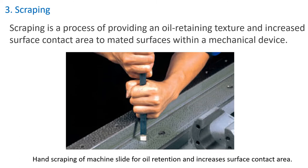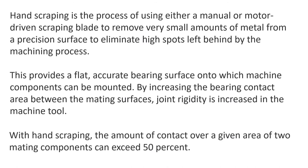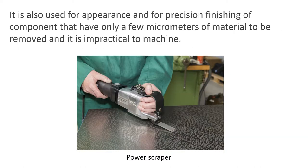Section 3: Scraping. Scraping is a process of providing an oil-retaining texture and increased surface contact area to mating surfaces within a mechanical device. Hand scraping uses either a manual or motor-driven scraping blade to remove very small amounts of metal. Scraping increases surface contact area, thus increasing machine rigidity. With scraping, the amount of contact over a given area of two mating components can exceed 50%. Scraping is sometimes performed for cosmetic reasons and when machining is not practicable.